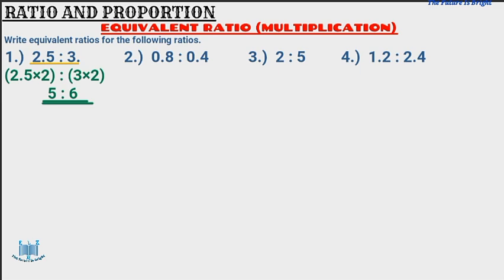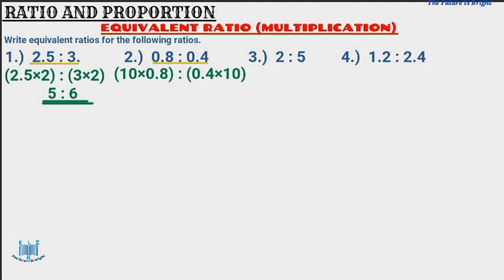Now let's go to question 2. I've got 0.8 to 0.4. To find the equivalent ratio, I'm going to multiply by 10 so that I get rid of the decimal points. So 0.8 multiplied by 10 gives us 8, and 0.4 multiplied by 10 gives us 4. The ratio 0.8 to 0.4 is equivalent to 8 to 4.